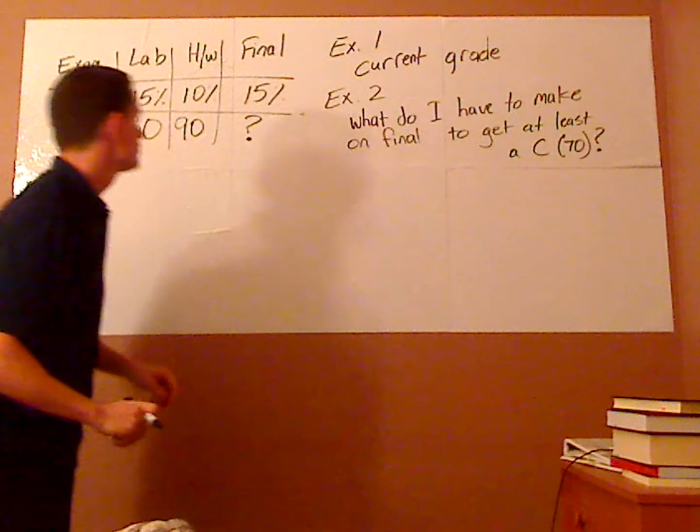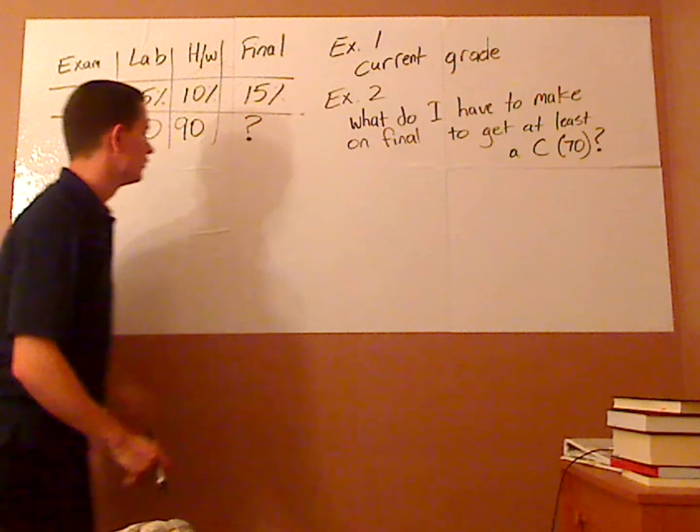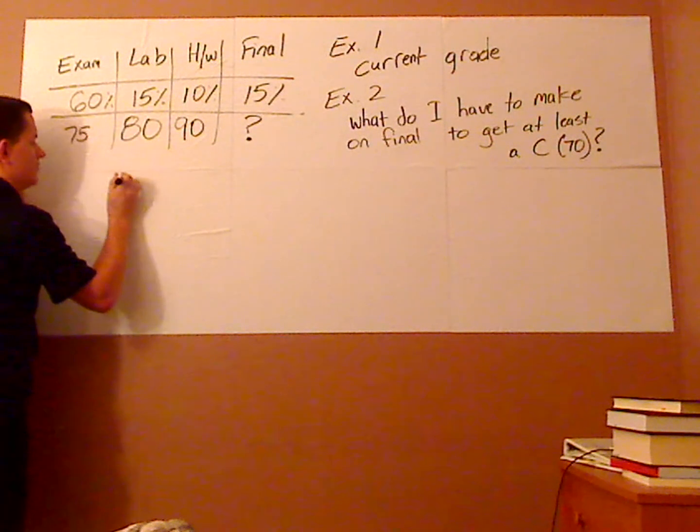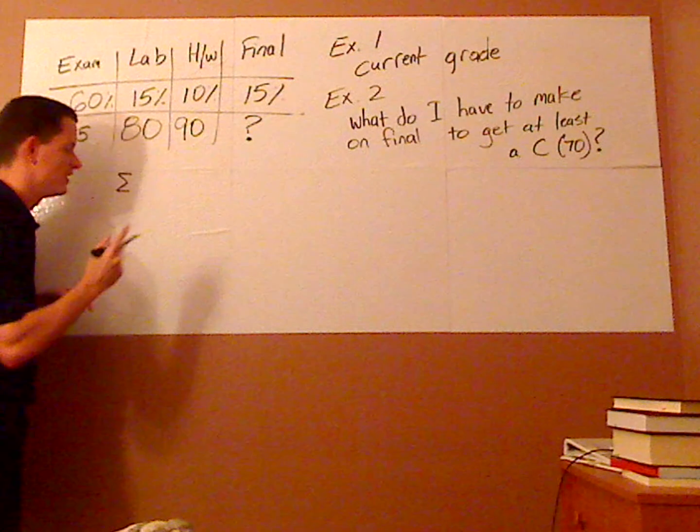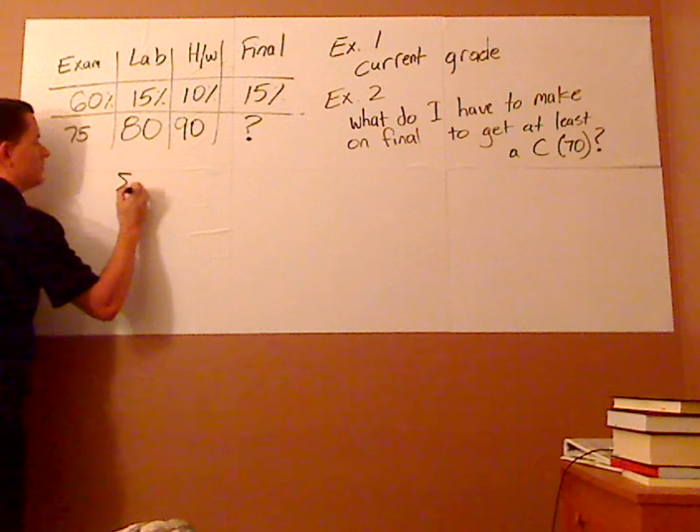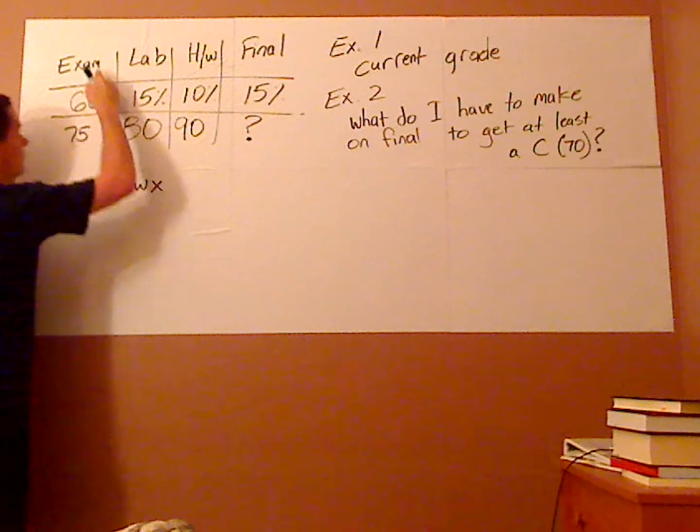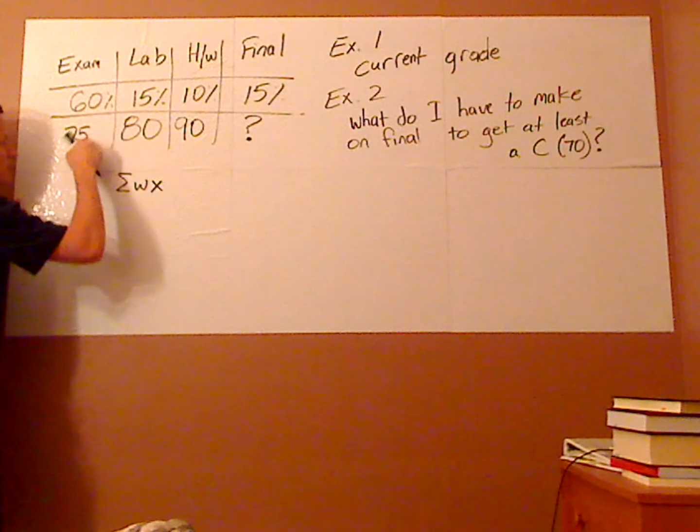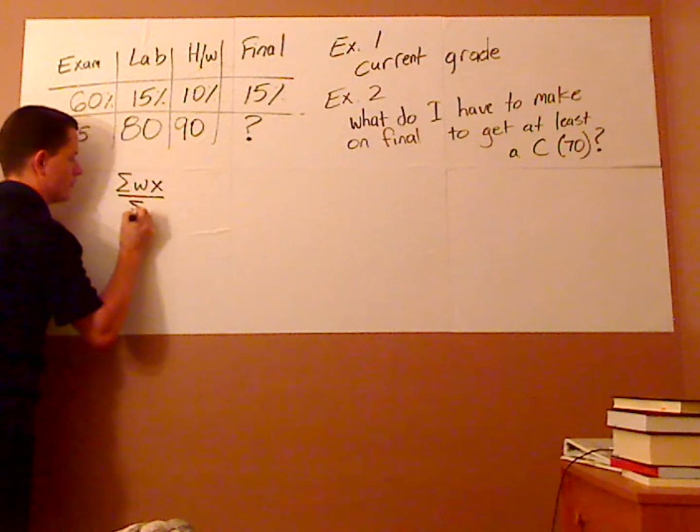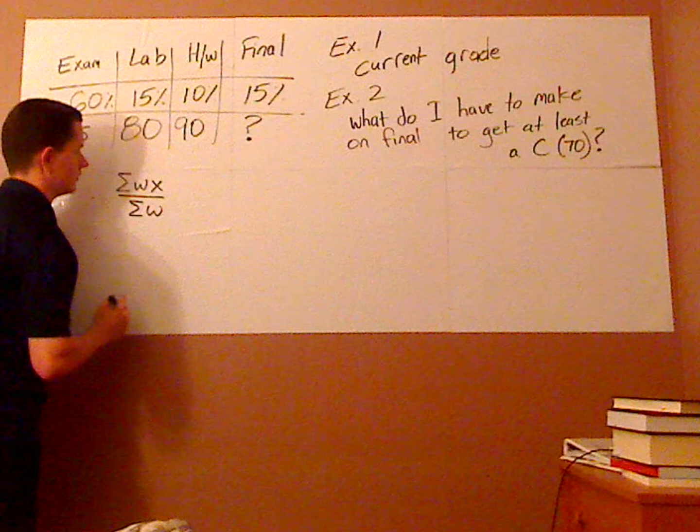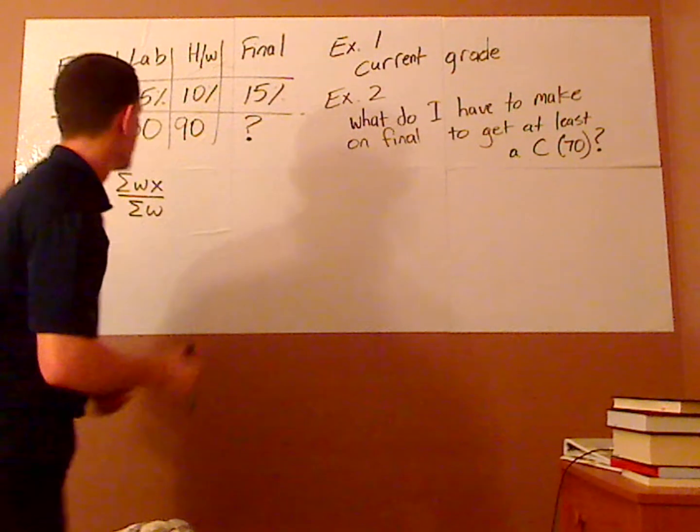So, first let's find how would I calculate my current grade. Well, it's a weighted mean. What that means is you have summation of W, which is the weight of the category, times whatever the value is, whatever the grade is, over the total weights. This just means sum, if you're not used to seeing that symbol, just adding them up.